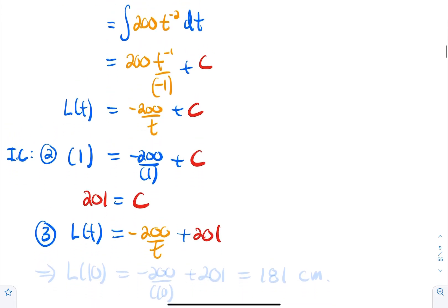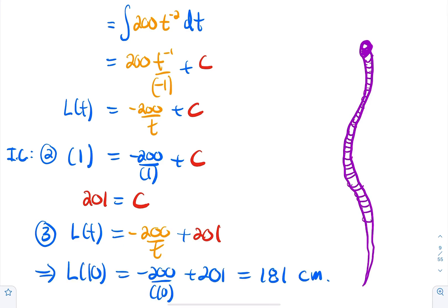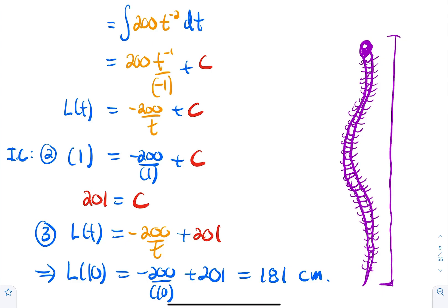The tapeworm is one centimeter long after day one — very cute. But what will its length be after 10 days? Plug t = 10 into the formula: L(10) = −200/10 + 201 = −20 + 201 = 181 centimeters. So after 10 days, the tapeworm is 1.81 meters long.